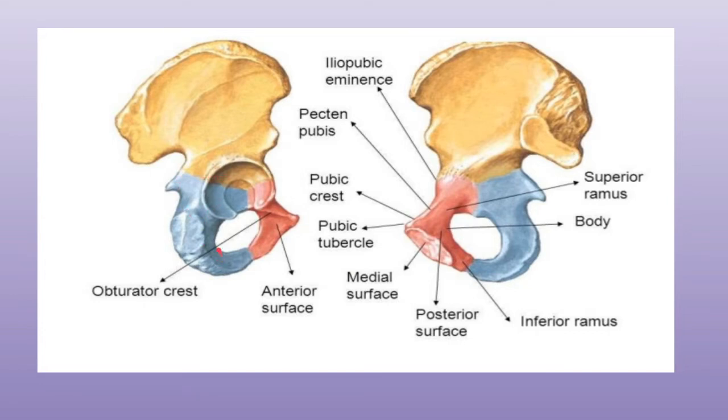The body of the ischium also has three borders: the anterior border, posterior border, and the lateral border. And three surfaces: the femoral, dorsal, and the pelvic surface.